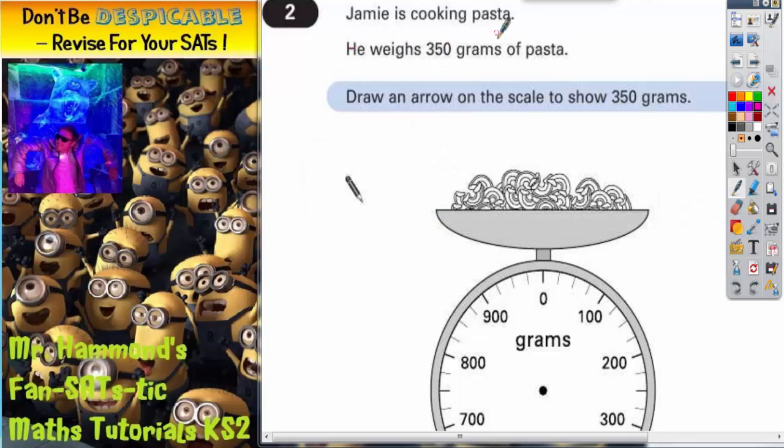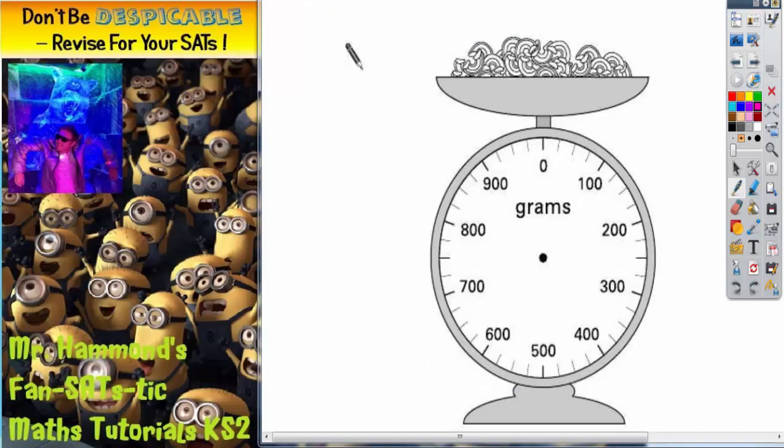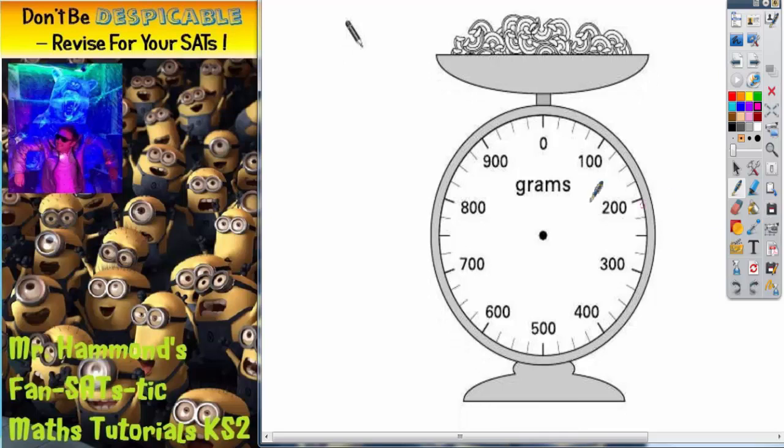Question 2: Jamie is cooking pasta. He weighs 350 grams of pasta. Draw an arrow on the scale to show 350 grams. So you've got to mark on 350 grams. Now the easiest way to do this is to say...